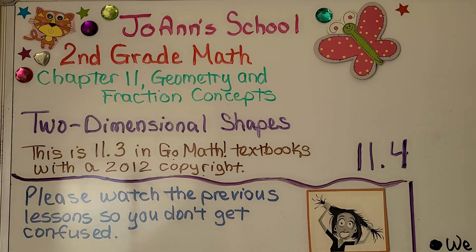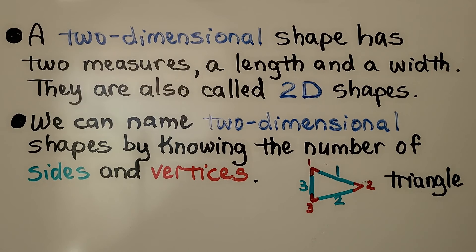We're at lesson 11.4 about two-dimensional shapes. This is 11.3 in Go Math textbooks with a 2012 copyright. A two-dimensional shape has two measures, a length and a width. They are also called 2D shapes. The D is for dimensions.